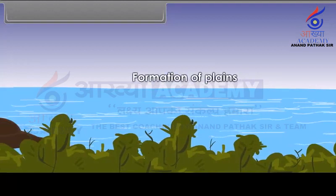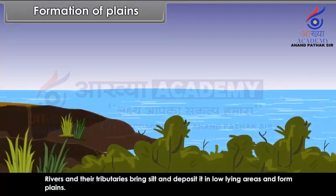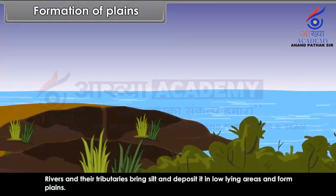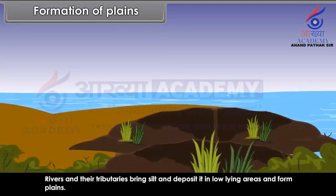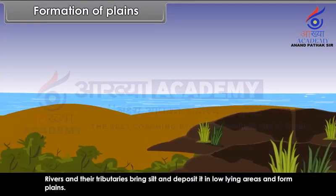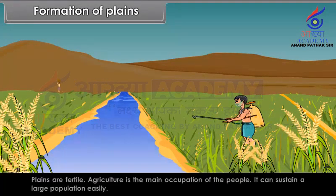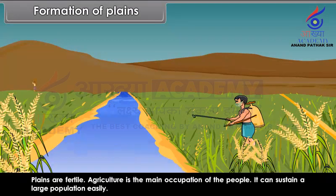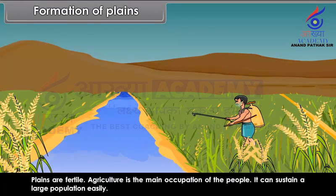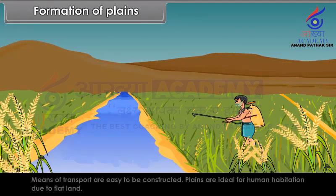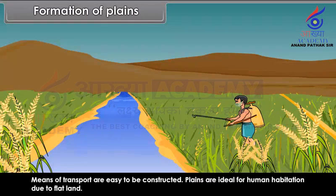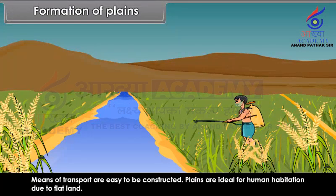Formation of Plains. Rivers and their tributaries bring silt and deposit it in low-lying areas to form plains. River plains are thickly populated because plains are fertile, agriculture is the main occupation, and they can sustain a large population easily. Means of transport are easy to construct, and plains are ideal for human habitation due to flat land.